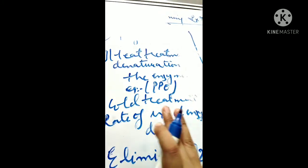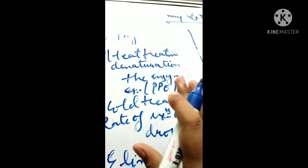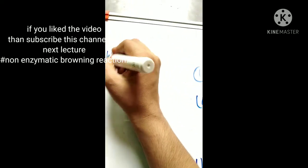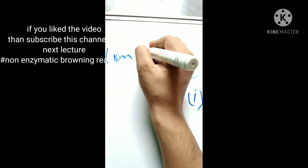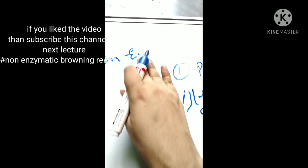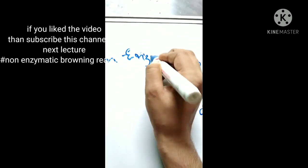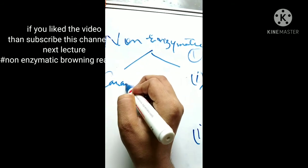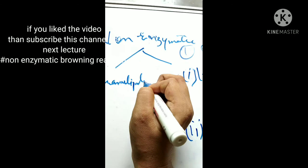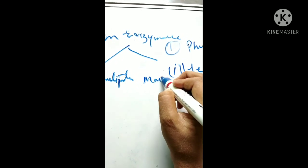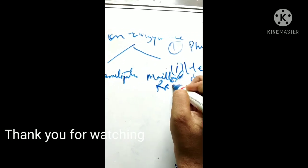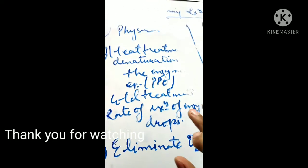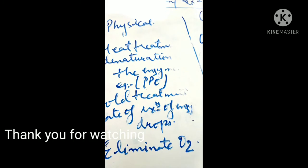This is all about the enzymatic browning reaction. In the next video, we will learn about non-enzymatic browning reaction, which is further categorized into two — caramelization and the Maillard reaction. This is all about the enzymatic browning reaction. Thank you.